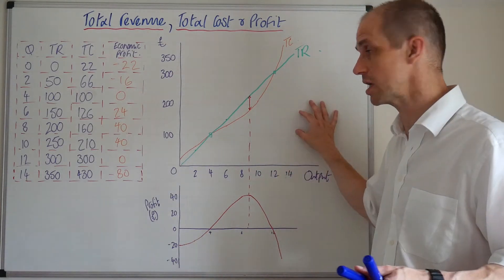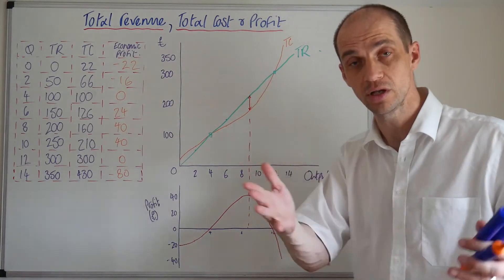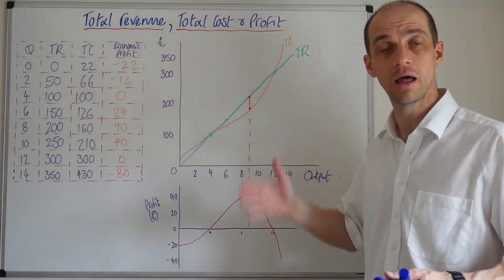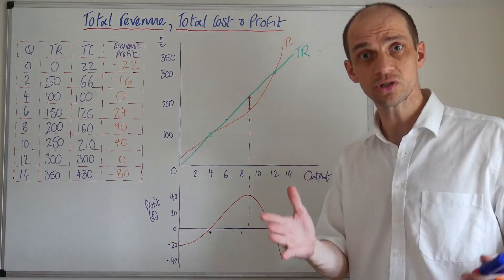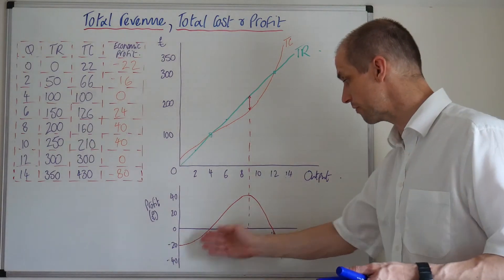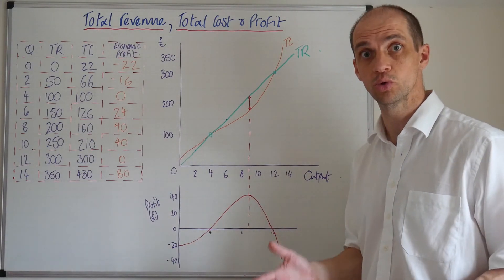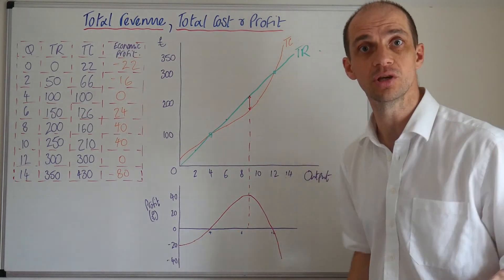It's possible you could see diagrams such as these cost, sorry, cost and revenue curves here. So it's possible that you could see cost and revenue curves like this, or a profit illustration like that, within your multiple choice questions. I hope that's been useful. Thanks, guys.